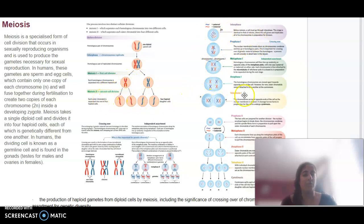You can see here, this part will be our meiosis one. We end up with two daughter cells, and then we have our meiosis two, where we end up with our final four daughter cells.